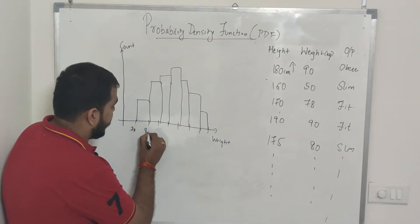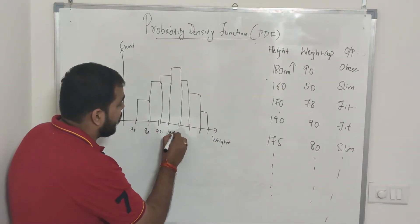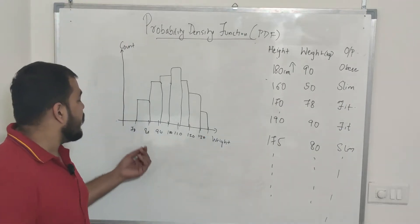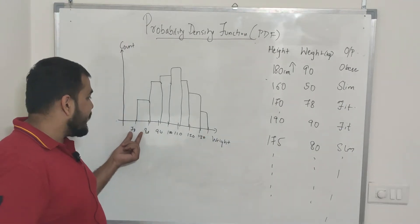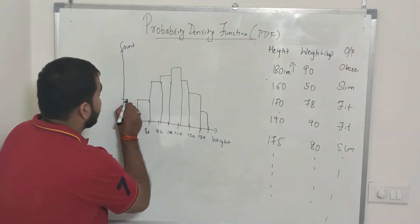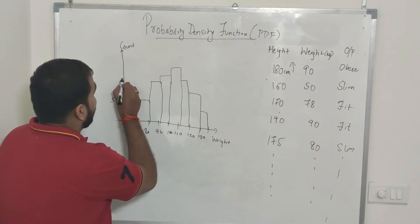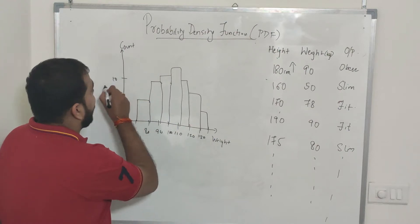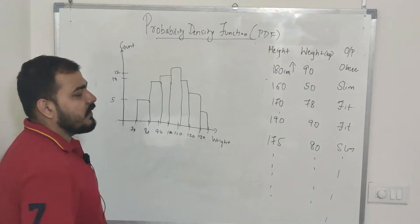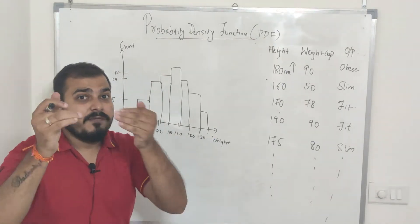The histogram's Y-axis tells us how many points are present within a given range. For example, between 70 to 80 kg you can see there are five values present. Between 80 to 90 there are around 10 values, and between 90 to 100 there are around 12 values. This is how we plot data in the form of a histogram.